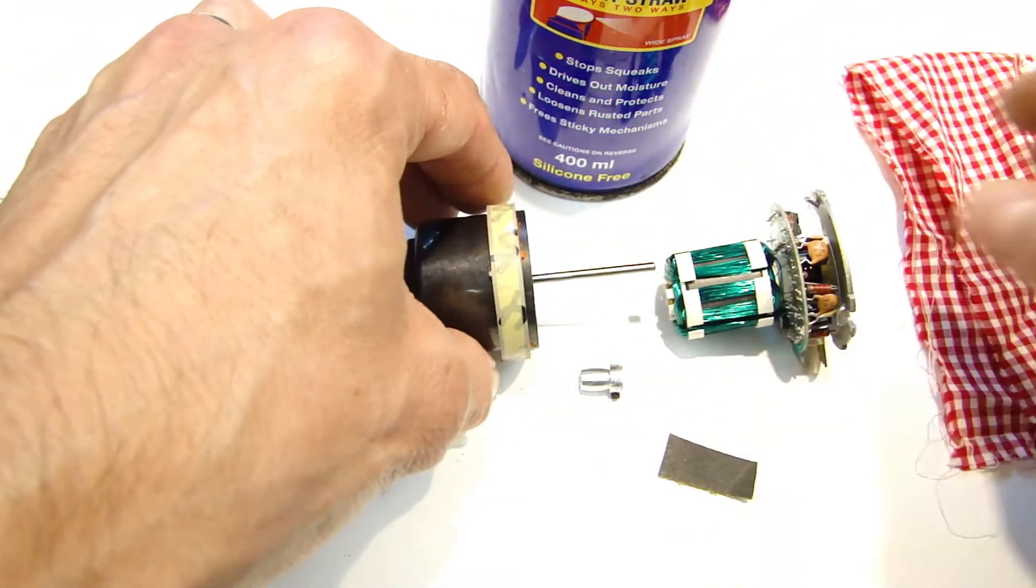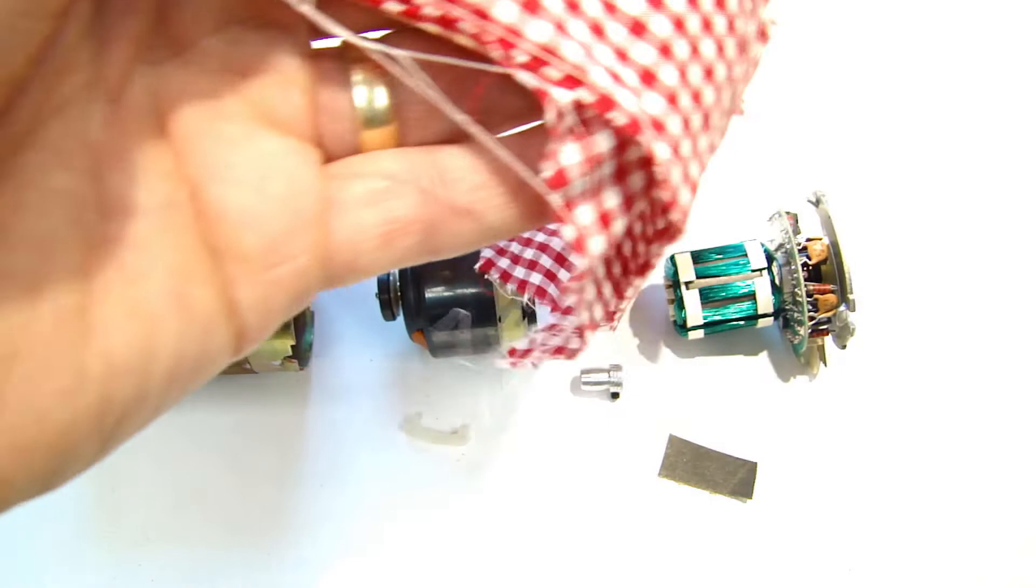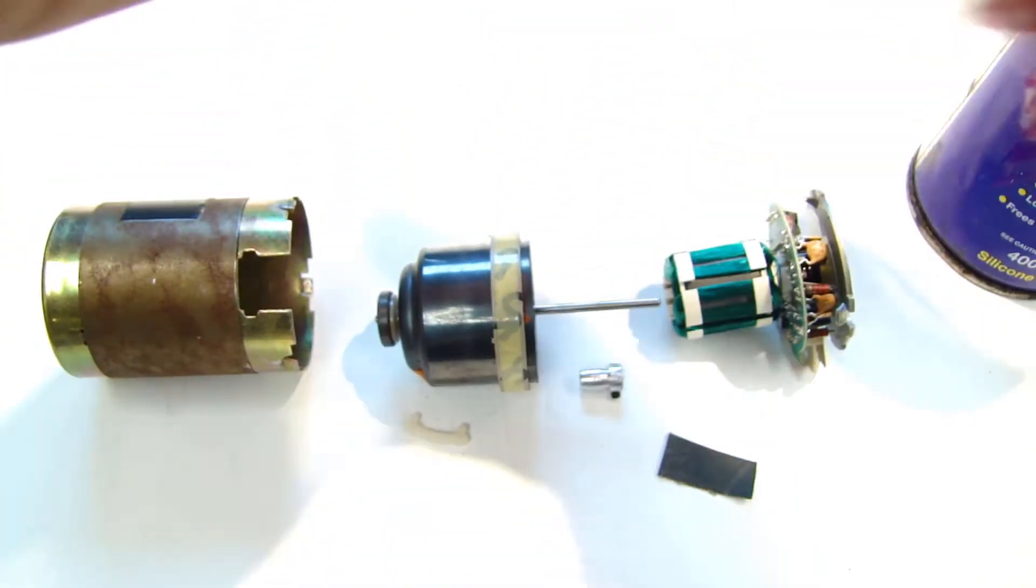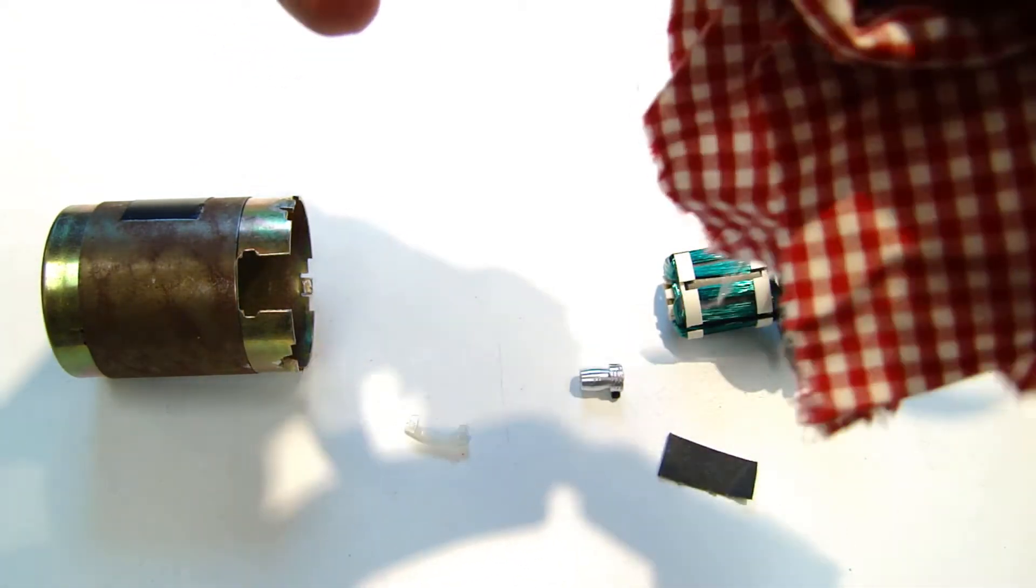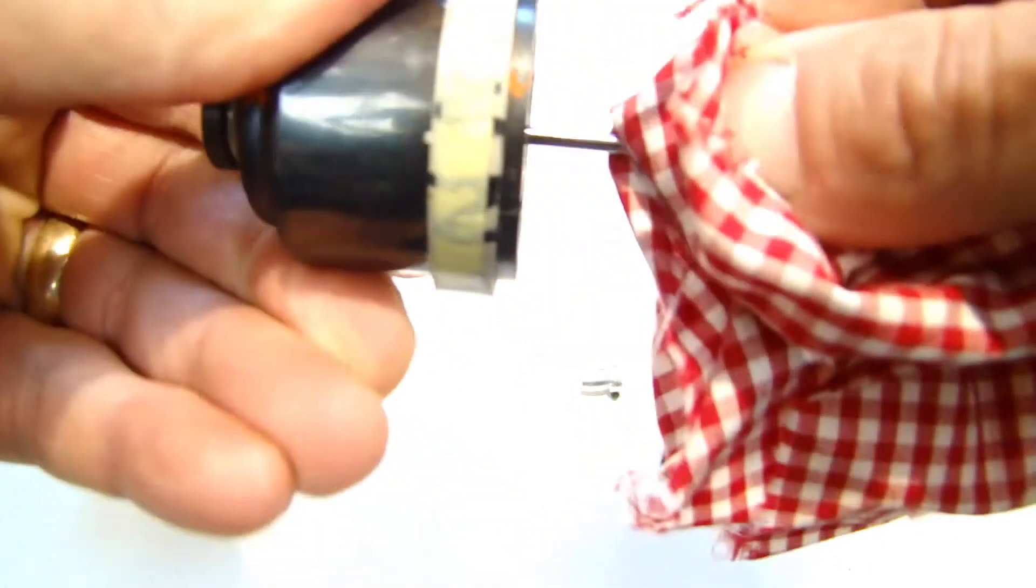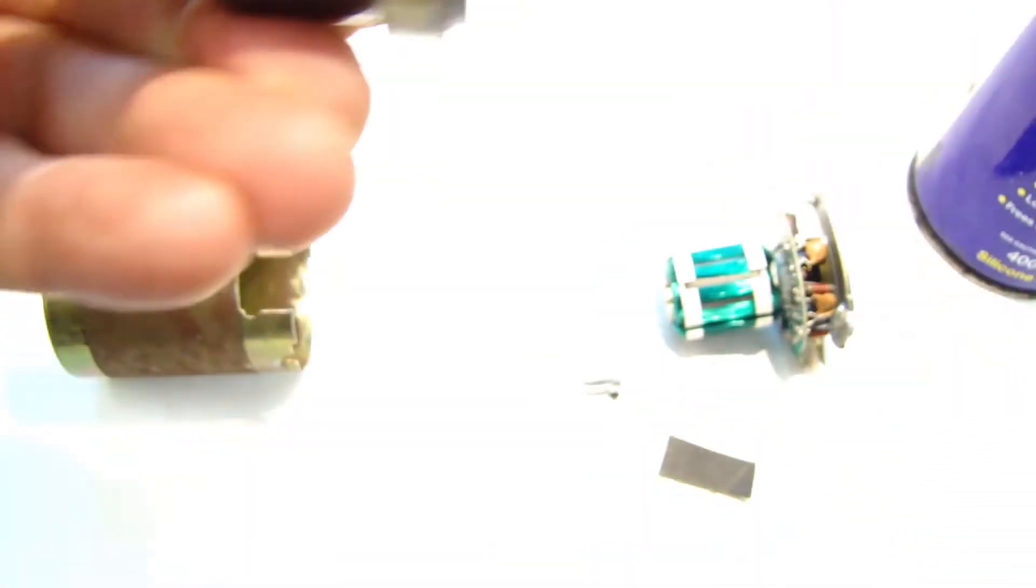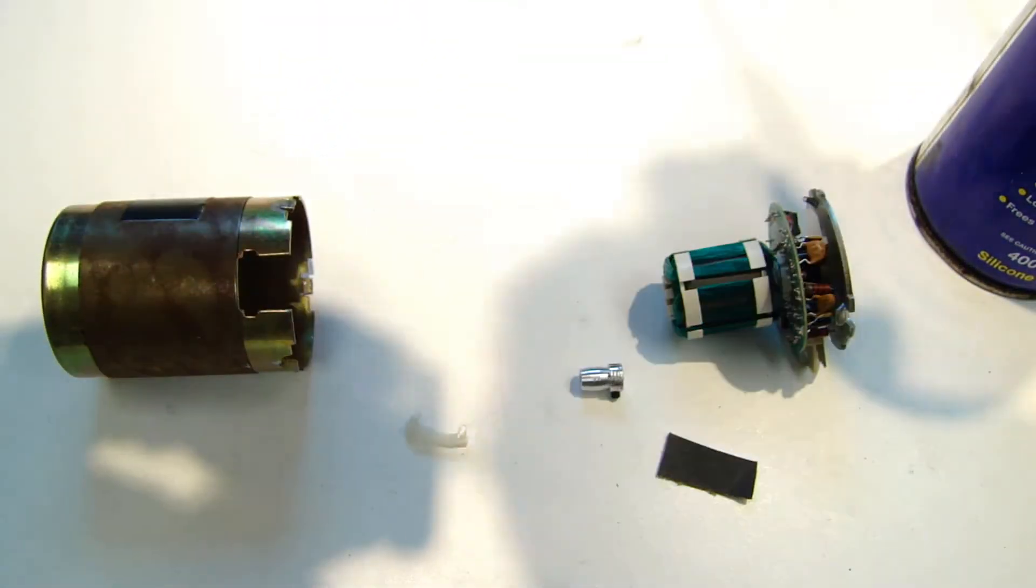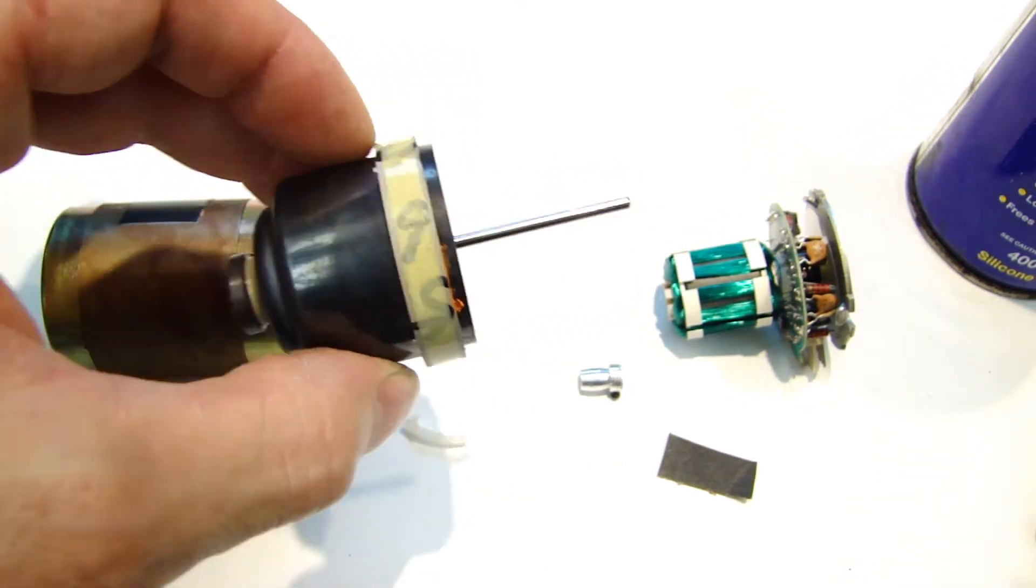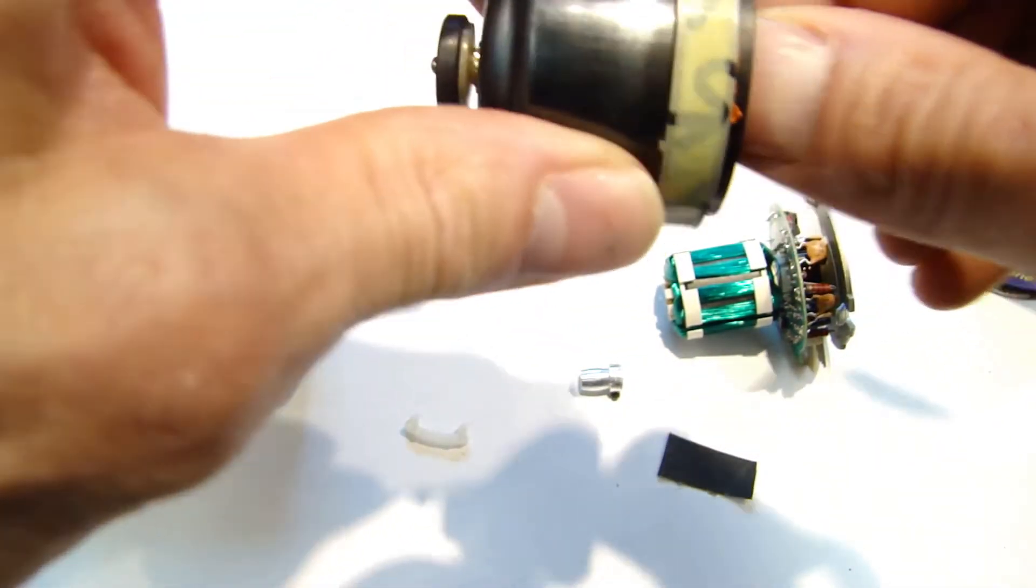So first of all I'm going to clean that shaft off with a rag with a teeny bit of WD-40, just to remove anything otherwise it could end up binding up the sandpaper. That's nice and clean now, a little smooth as well.